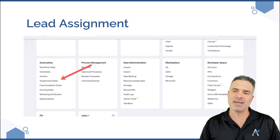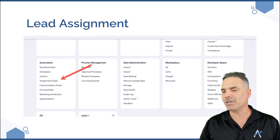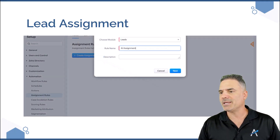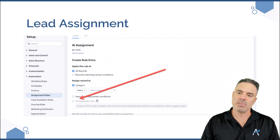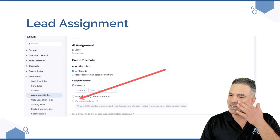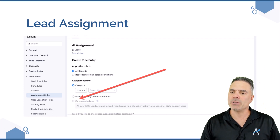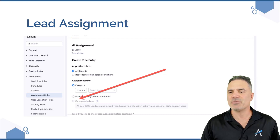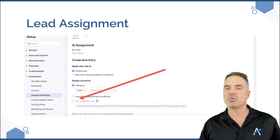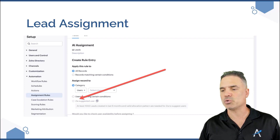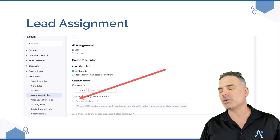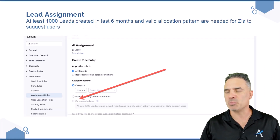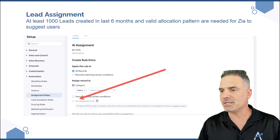In order to define the assignment rules, you will go to settings, then assignment rules. Click on the assignment rule, give it a name, and on the bottom you will need to select ZIA suggested user. You can only do this when your system has at least 1,000 leads in the last six months. As I said before, everything about artificial intelligence is data — without data the system cannot produce good results, and therefore it is not even an option for people that don't have enough leads. For most of our clients this isn't a problem, as most will have more than a thousand leads in six months.